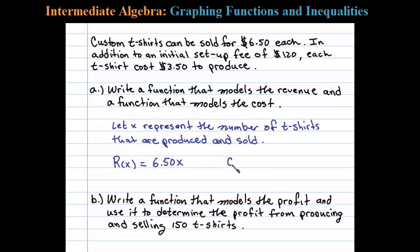The cost denoted with a capital C is equal to an initial setup fee of $120 plus the cost of producing the t-shirts. It's in this case $3.50 times x, where x is the number of t-shirts produced. Let's write this as 3.50x plus 120. That's our cost function.